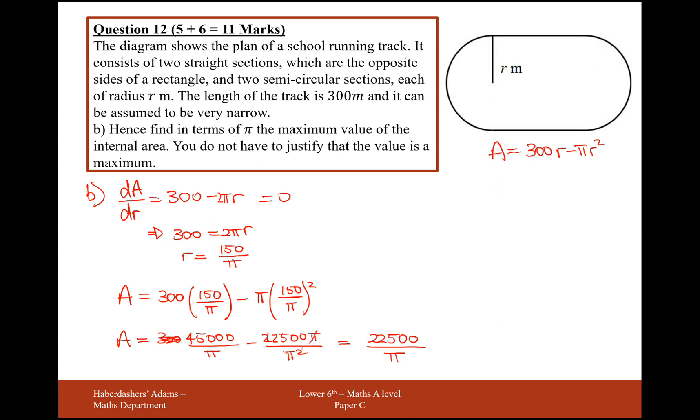This is going to give us 22,500 over π. So one of the π's will cancel here, one of the π's will cancel here. And that's how we can just subtract the two from each other because they have a common denominator of π. So 22,500 over π is the maximum value of the area, internal area of the track. Great. 11 marks. Thank you.